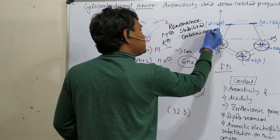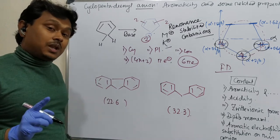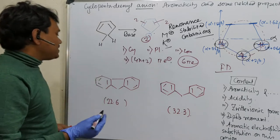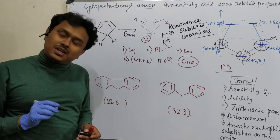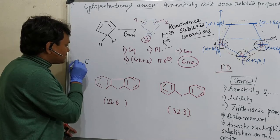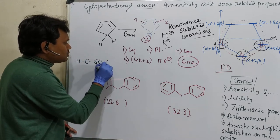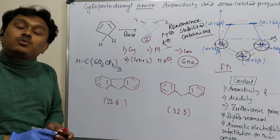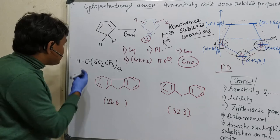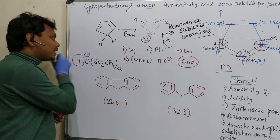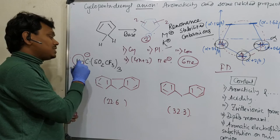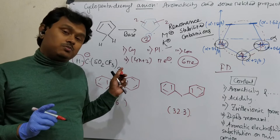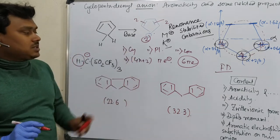Usually carbanions are not stable, but if they are resonance-stabilized they are stable. I want to give you an example: triflic acid. This has three CF3SO2O groups and is actually a super acid. What is acting as a super acid? The C-H bond, because the resulting carbanion is resonance-stabilized. I have already made a dedicated video about it — please visit if you want.